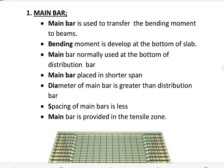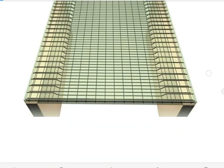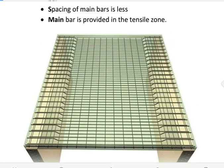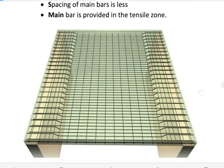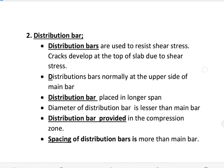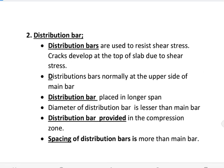Main bars are placed in the short span. The diameter of main bars is greater than distribution bars. The spacing of main bars is less. Main bars are provided in the tensile zone.